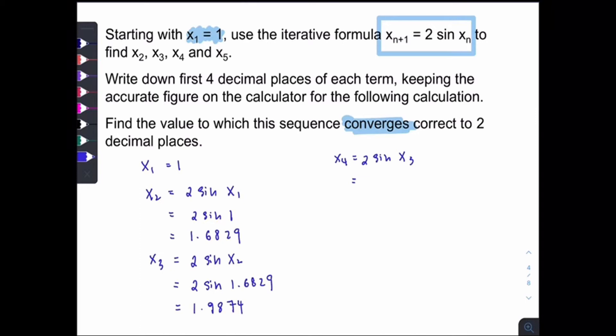Which is 1.9874. So x4 should be 2 sin x3. So the answer should be 1.8289. x5 should be 2 sin x4. So the answer should be 1.9337. This is how we make use of the iterative formula.